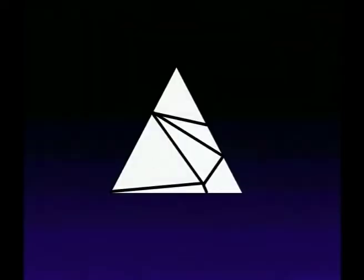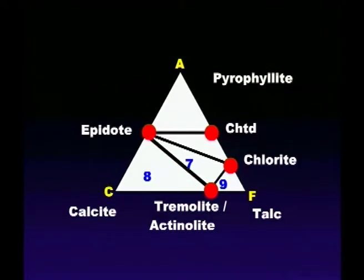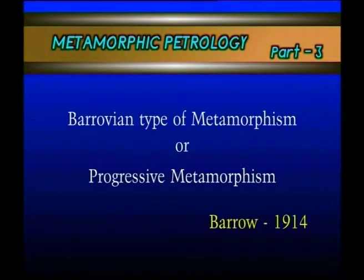For example, if chlorite is present in the biotite zone, we can observe the chlorite and biotite zones respectively. Biotite is normally absent in the lower zone — that is, biotite is absent in the chlorite zone — while chlorite is present with biotite in a higher zone. One line demarcates where both are present as a common assemblage. On the basis of these index minerals, first recognized by Barrov in 1914, these zones are known as Barrovian type of metamorphism, also known as progressive metamorphism.